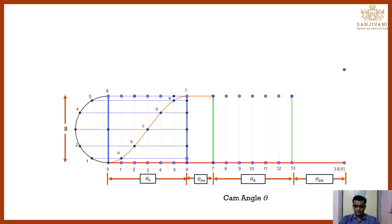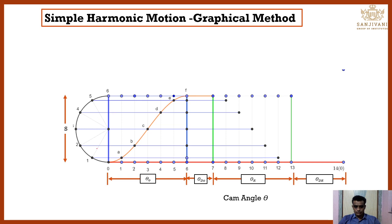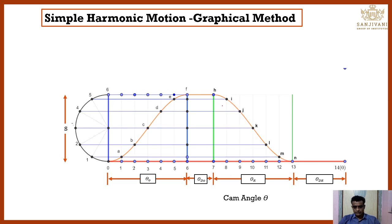For the dwell period, there is no displacement of the follower, so this portion is a horizontal line. For the return stroke, mark the division points and give reverse numbering: one, two, three, four, five, six — then continuing as seven, eight, nine, ten up to thirteen. Mark the corresponding points H, I, J, K, L, M, N, and O. In this way you can draw the complete displacement diagram using simple harmonic motion.